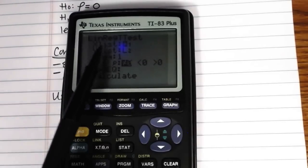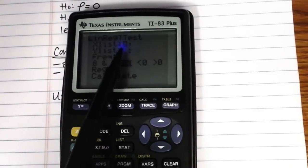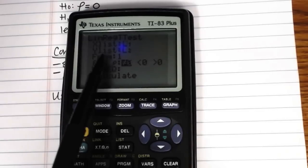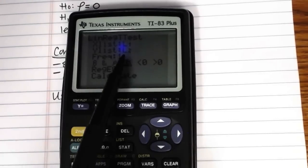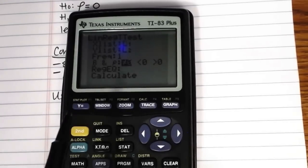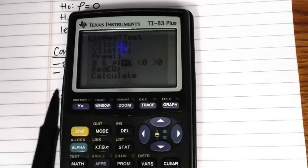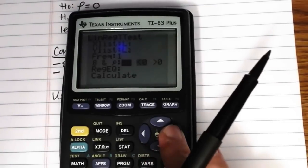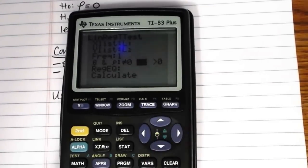Then it'll ask you, what's your x list? So where were your x data stored? Mine were in list one, so I have L1 there. Y list, where were your y data stored? Mine were in L2, so I have L2 there. Frequency set to one, because I don't have a frequency list for this set of data. Beta and rho, here's where we're going with a less than zero.